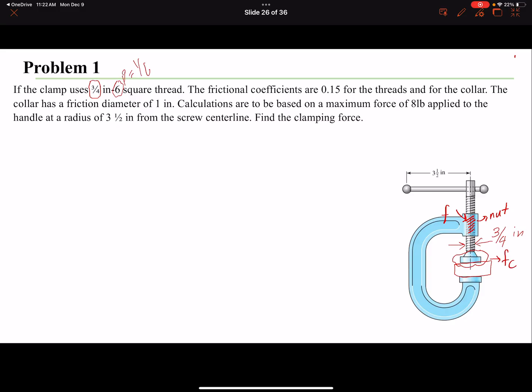Both of them are the same in this problem. The collar has a friction diameter of 1 inch, so dc is 1 inch - it's not the diameter, it's the friction diameter, so that would be the average diameter. Calculations are to be based on a maximum force of 8 pounds applied to the handle.